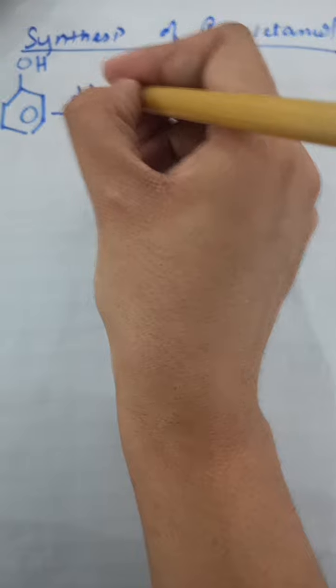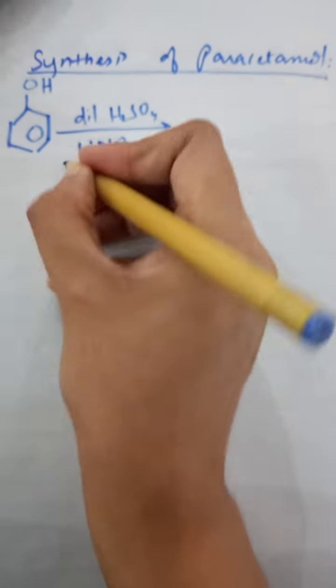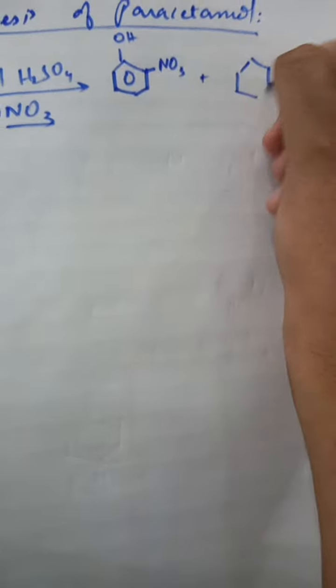Then in the presence of dilute H2SO4 and HNO3, this nitro group becomes attached with the phenol and it becomes 1-nitrophenol and 4-nitrophenol.